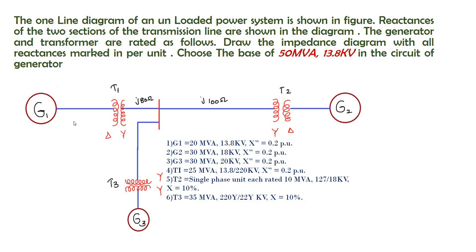A pleasant greetings to all. In this video I am going to explain how to find the per unit impedance and how to draw the per unit impedance diagram for the power system network given. The one line diagram of an unloaded power system is shown in figure. Reactances of the two sections of the transmission line are shown in the diagram. The generator and transformer are rated as follows. Draw the impedance diagram with all the reactances marked in per unit. Choose the base of 50 MVA, 13.8 kV in the circuit of the generator.